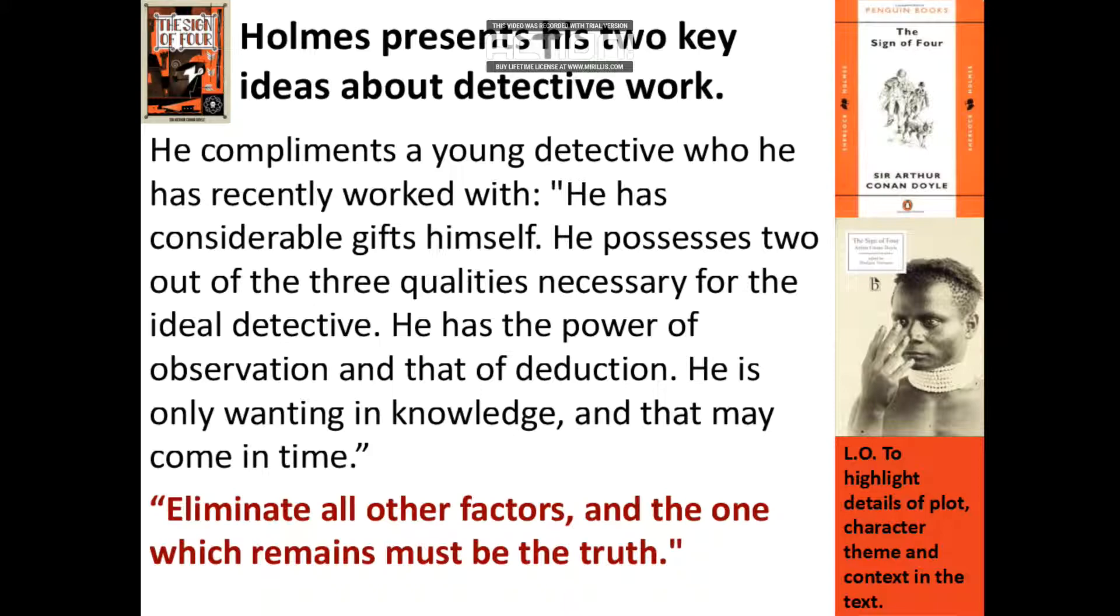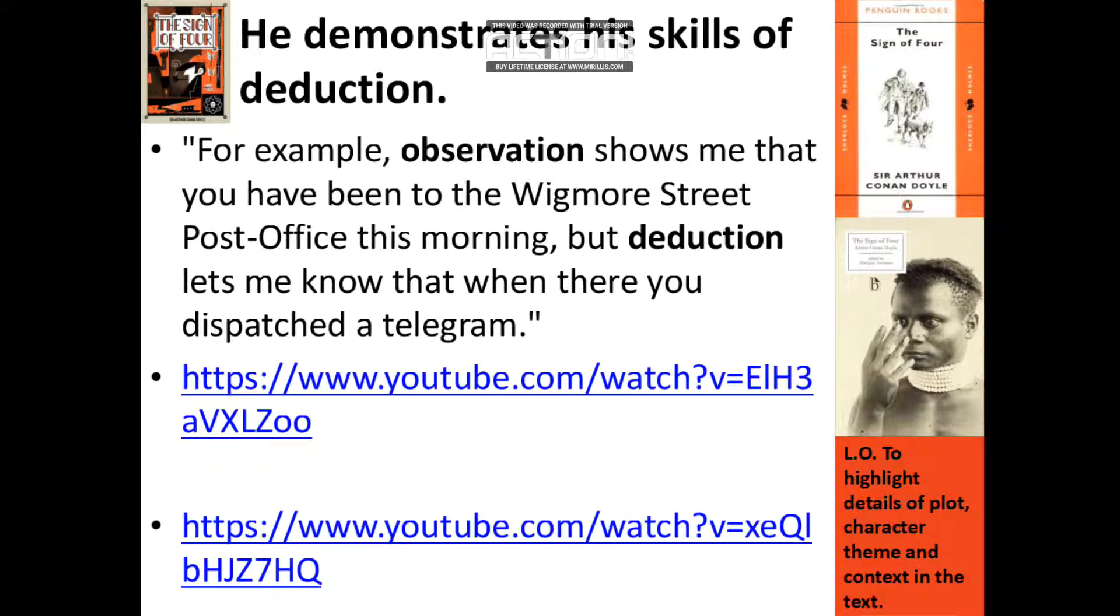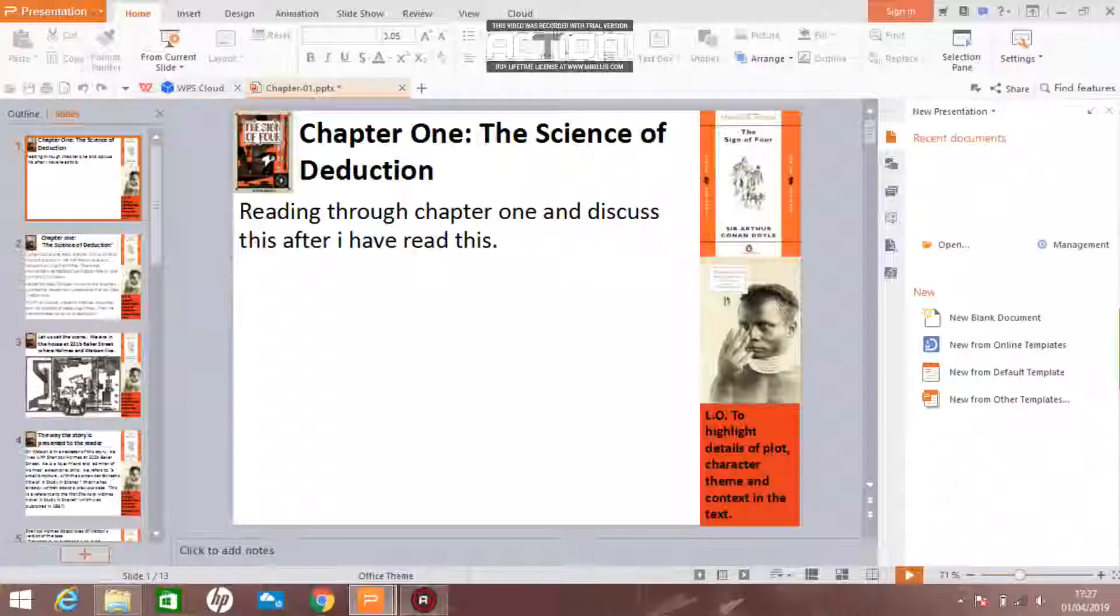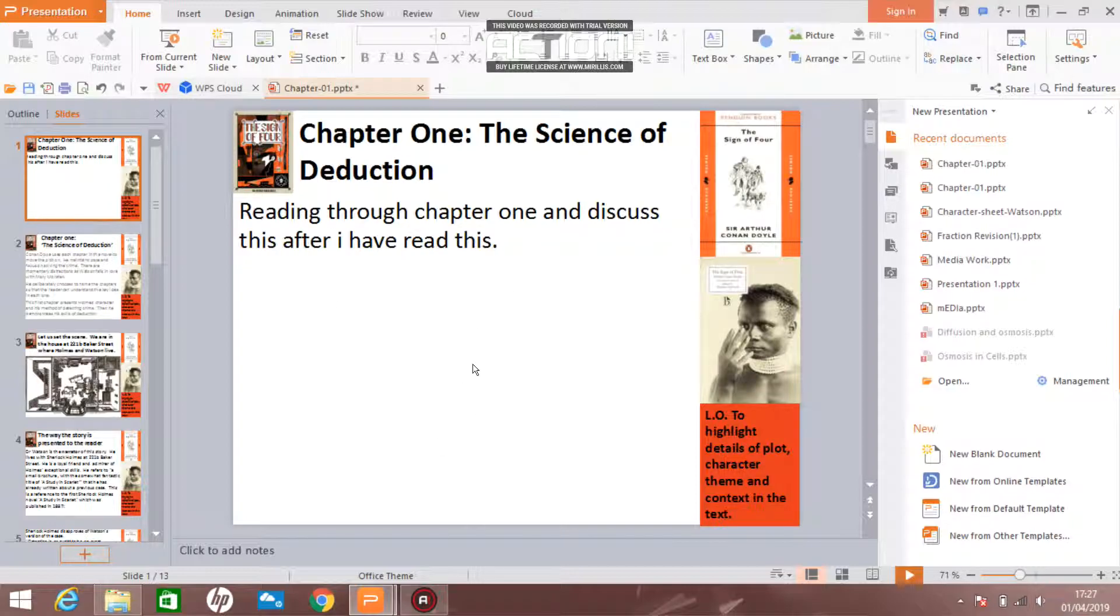You'll see two key ideas about detective work. He compliments a young detective who he had recently worked with. And this quote here: 'Eliminate all the factors, and the one which remains must be the truth.' And here's some links for you to demonstrate the skills of detection. So by practicing PEE or PETAL, you must write a sentence to describe Sherlock Holmes as he reveals in this quotation below in evidence: 'My mind rebels at stagnation. Give me work, give me problems.' And here are some questions to think about: Why has Conan Doyle created his character in this way? How does he describe Holmes' actions, and what makes him engaging for the readers? And that recorded idea for English. Please like, comment, and subscribe, and thank you for watching.